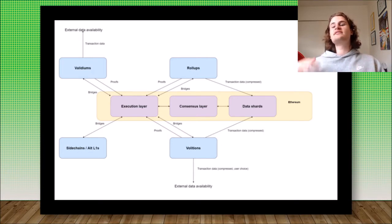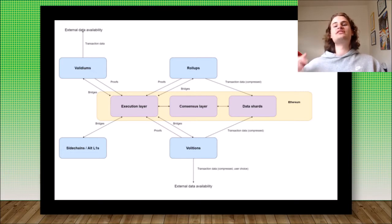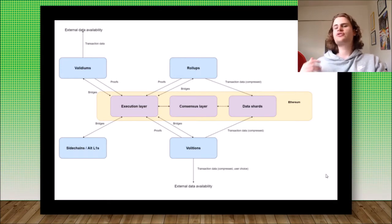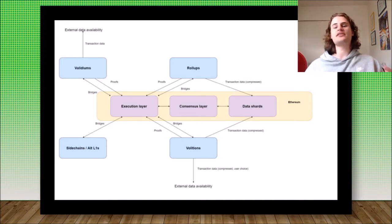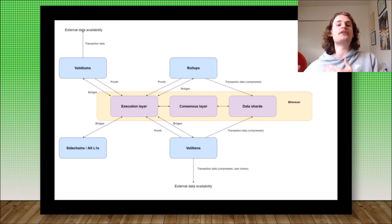The execution layer is essentially where transactions are executed — where a transaction is processed, executed, and finalized. Once that transaction is finalized, it is added to the blockchain, into a block, and this goes into the consensus layer. When these transactions are added to a block, these blocks are then validated. Every time a block is validated by the network, this is essentially consensus. Individuals who are staking their Ethereum are validating blocks, and in reward for validating a block, they get given Ethereum.